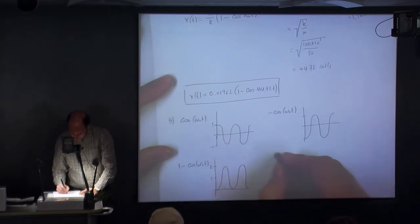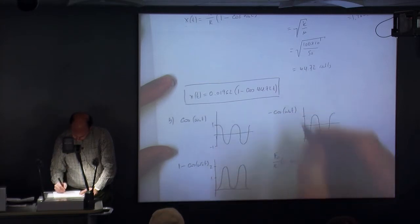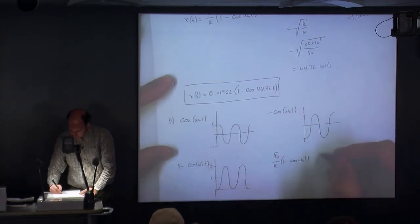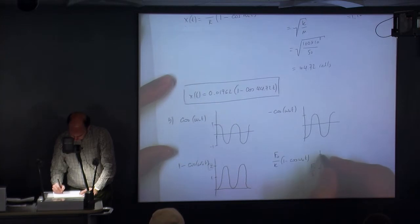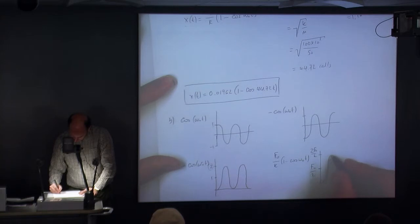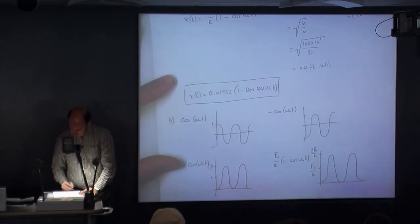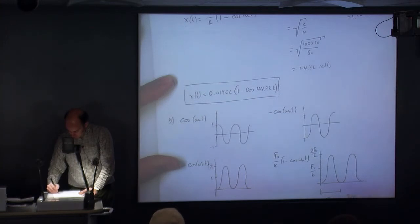And obviously f naught upon k times by 1 minus cosine omega naught t is we end up with this thing. Instead of being 2, it's 2 f naught upon k, and the cosine is centred around f naught upon k. So that's f naught upon k, and that's 2 f naught upon k. And your period, t naught is 2 pi divided by omega naught.